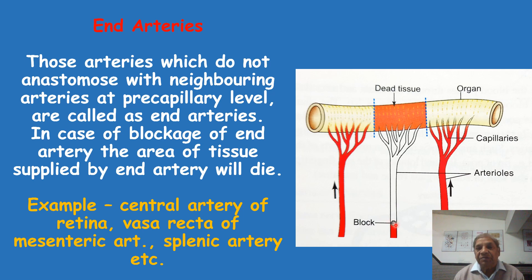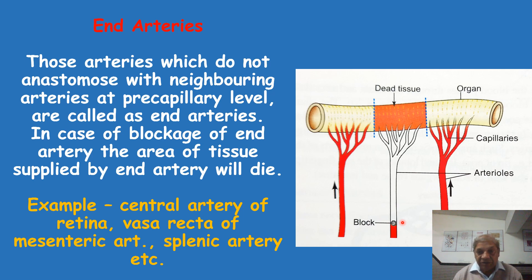In case of blockage, if this arteriole is blocked, no blood can go to the capillary plexus of this arteriole. Therefore, the tissue which is supplied by this capillary will die. There will be necrosis or death of the tissue because there is no pre-capillary anastomosis. This kind of arteries are found at various places in our body. Though pre-capillary anastomosis is generally the rule in most tissues of our body, there are certain places where it is absent.